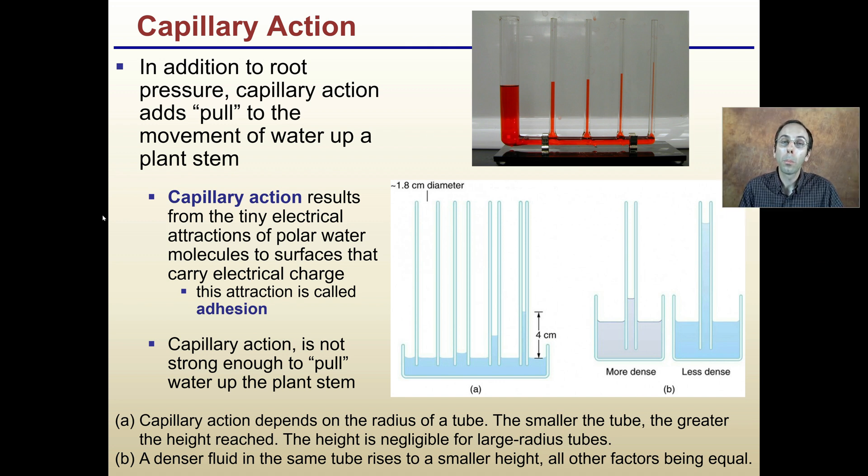This is occurring also with the help of capillary action. In addition to root pressure, capillary action adds to the pull of the movement of water up the stem. Capillary action results from tiny electrical attractions of polar water molecules to surfaces that carry an electrical charge. This attraction is called adhesion. Here we see a red liquid and different diameter tubes. As the diameter of the tube gets smaller, we're noticing that the ability for that red liquid to travel up the tube is increasing. As it gets smaller and finer, it's able to fight the force of gravity and overcome that force to a greater extent. These factors are coming together, helping the process.